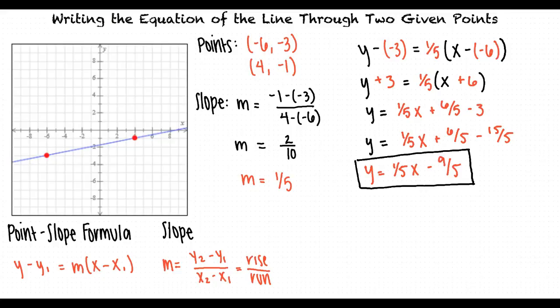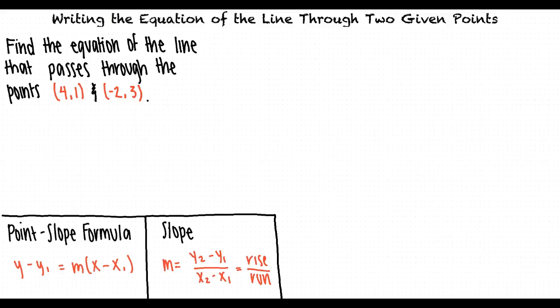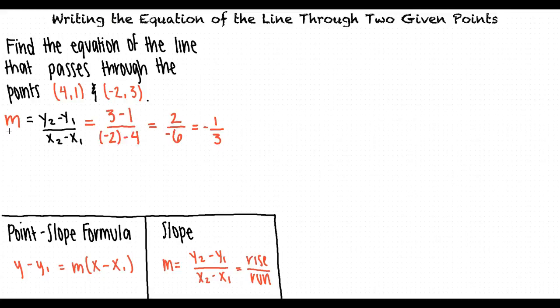Another variation of this type of problem might be if we were told to find the equation of the line that passes through the points 4 comma 1 and negative 2 comma 3. We could still do this the same way, because in the last one we just had to identify the two points on the graph, but in this problem it gives us the two points. We can still find the slope using the two points given to us, and from there we can use the point-slope formula to find the equation of the line. We use our slope formula and substitute our given points for the appropriate x and y coordinates. When we simplify, we get m equals negative 1 third.